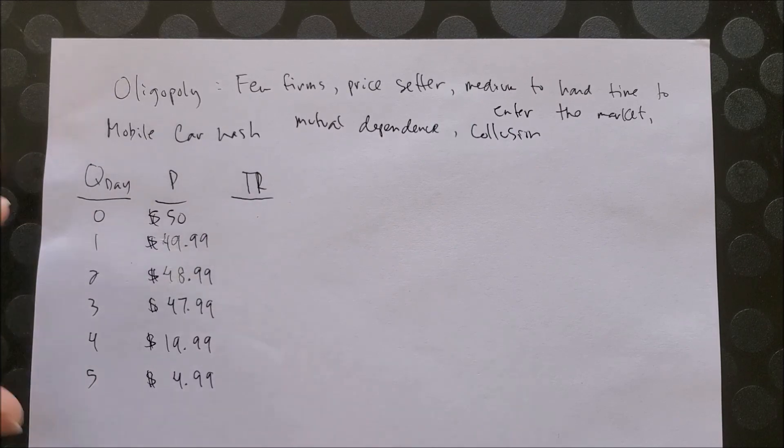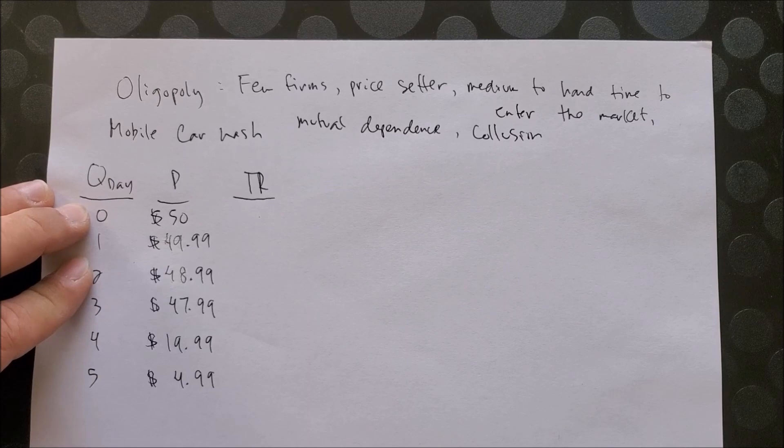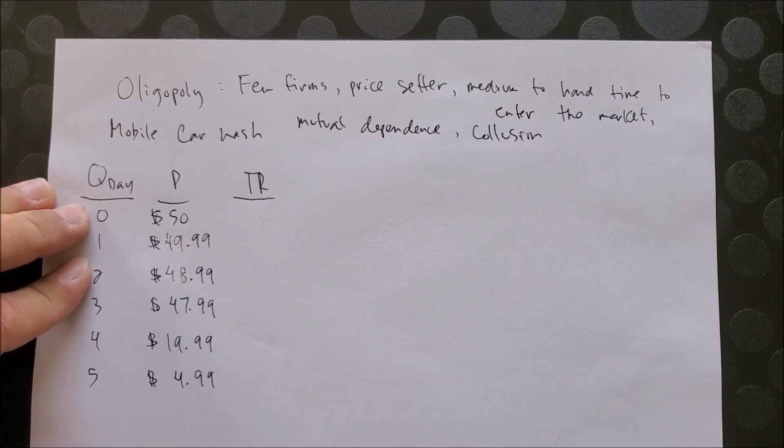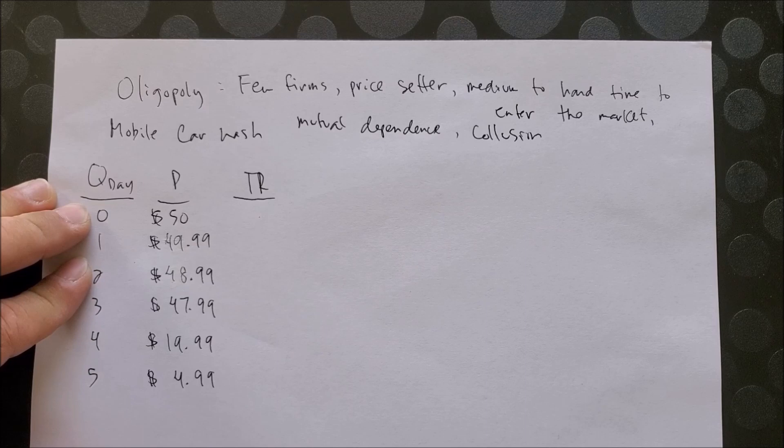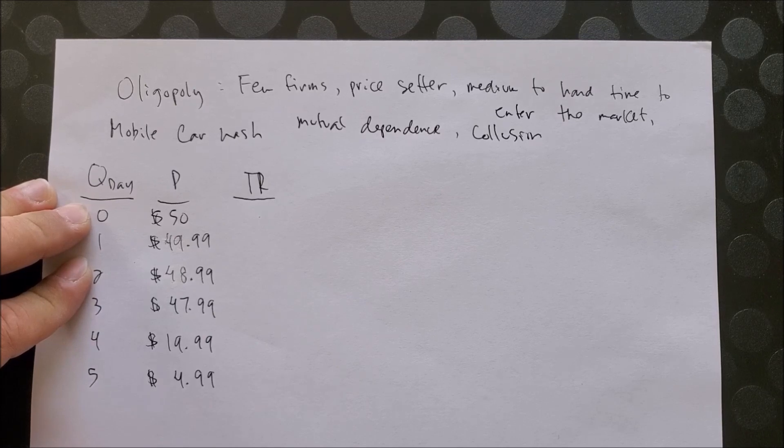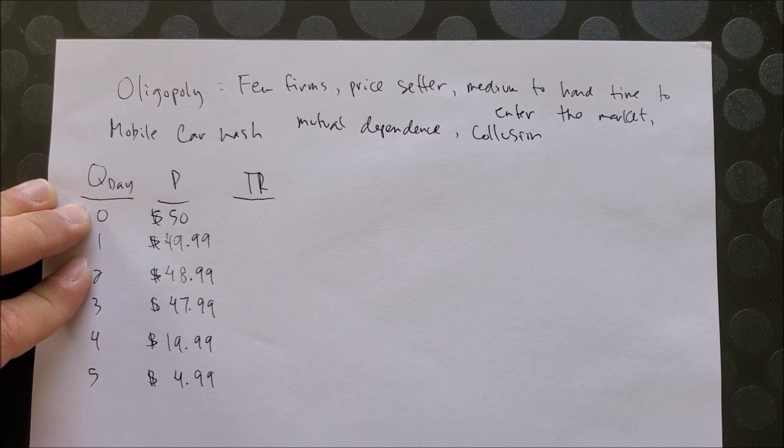If you think about collusion in a real life example, we have OPEC, which stands for the Organization of Petroleum Exporting Countries. They are in essence a cartel where the nations that are the producers of petroleum are able to get together and really have a strong impact on the production of oil produced, thereby affecting the price of oil per barrel. So there is that potential collusion when it comes to an oligopoly market.